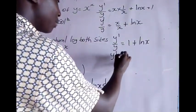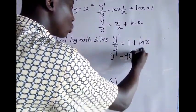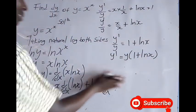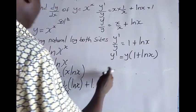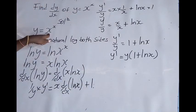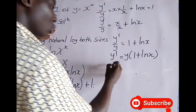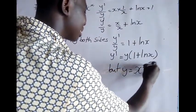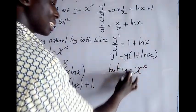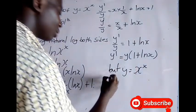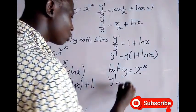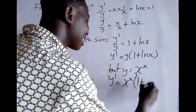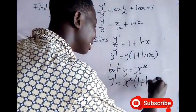So dy/dx of y equals y times (1 plus ln(x)). But from the original function we can see that y equals x^x. So substituting x^x in place of y, we get dy/dx equals x^x times (1 plus ln(x)).